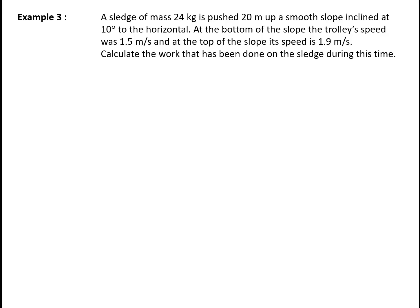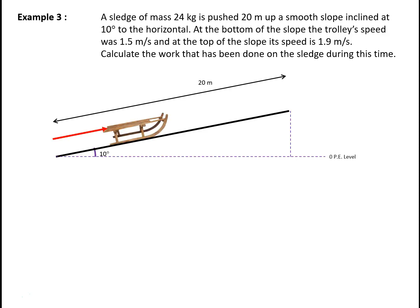For the next example, we have a sledge of mass 24 kilograms pushed 20 meters up a smooth slope inclined at 10 degrees to the horizontal. At the bottom of the slope, the sledge's speed was 1.5 meters per second, and at the top its speed is 1.9 meters per second. We have to calculate the work done on the sledge during this time. Starting with the diagram, the work done on the sledge produces the change in energy of the sledge.